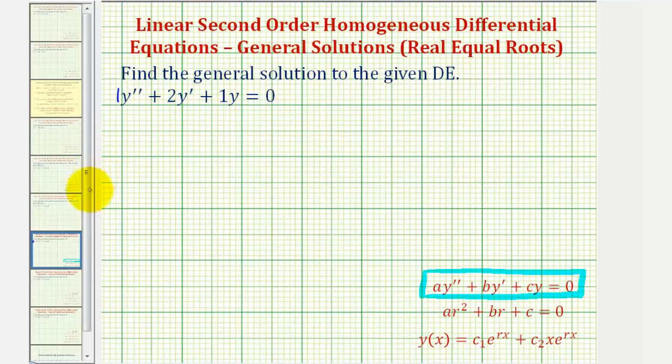Therefore, the characteristic equation will be one r squared, or r squared, plus two times r, plus one equals zero.